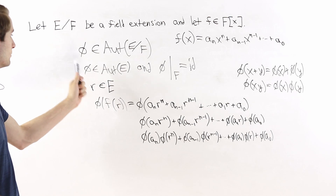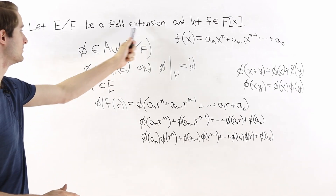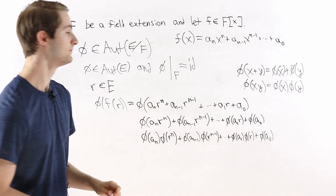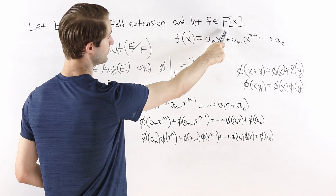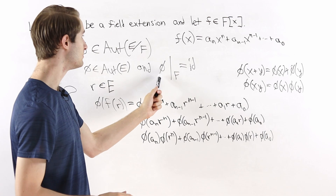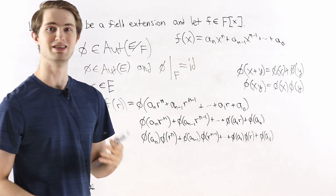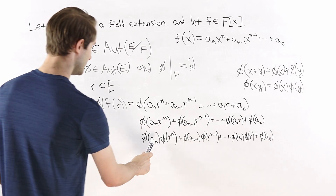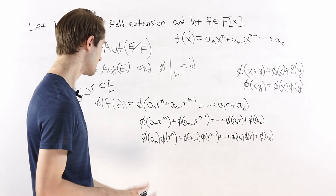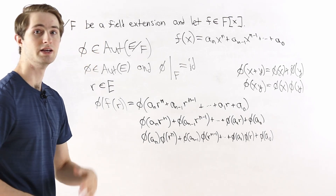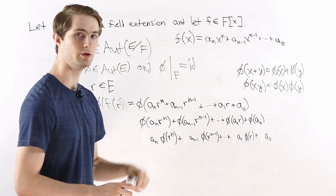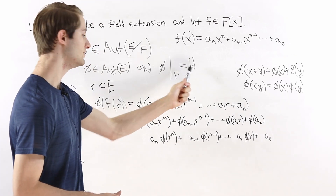Now recall that one stipulation for phi being an automorphism of this field extension is that phi restricted to the base field F is the identity function. Our polynomial f has coefficients in the base field F, so phi applied to any of those coefficients is just the identity. In particular, phi of a_n, a_{n-1}, down to a_1 and a_0 — phi of any a_i is just a_i. So we can remove the application of phi to the coefficients, since applying phi to an element of the base field does nothing.